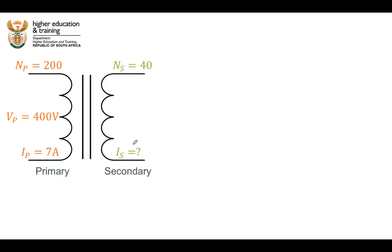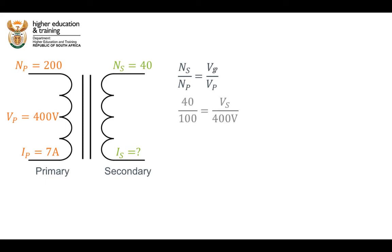We can't work out the current through the secondary coil until we know the voltage across it, and thankfully we have our transformer equation. We know the number of turns in both coils and the voltage across the primary coil, so we can work out the secondary voltage. We get 40 divided by 200 equals V₂ divided by 400 volts. Simplifying and rearranging, we multiply both sides by 400 volts and find that the voltage across the secondary coil is equal to 160 volts.